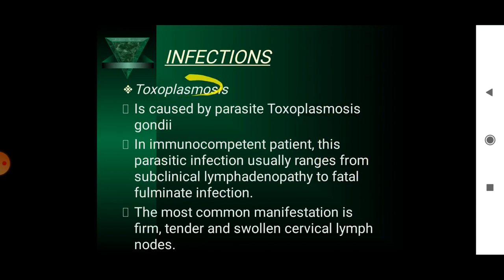Toxoplasmosis is caused by the parasite Toxoplasma gondii. In immunocompetent patients, this parasitic infection usually ranges from subclinical lymphadenopathy to fatal fulminant infection. The most common manifestation is firm, tender and swollen cervical lymph nodes.